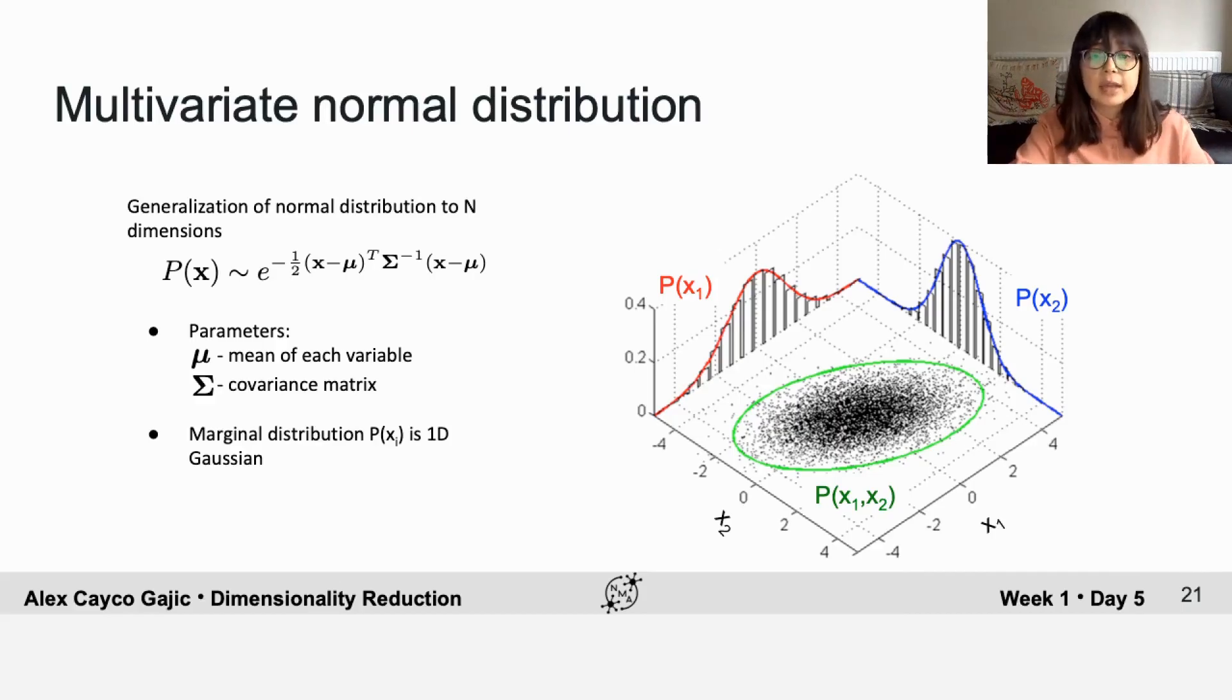And if you look at the marginal distribution of each neuron separately, then you recover the original one-dimensional Gaussian. So now it's your turn to play around with the covariance matrix and see how this affects the geometry of your data.